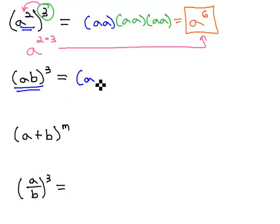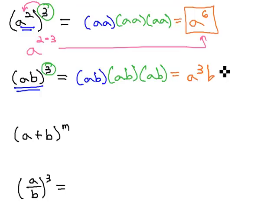Here we have this parentheses a b, and then it's there three times: a b, a b, a b. Notice when we do this, the factor of a is there three times, and the factor of b is also there three times.